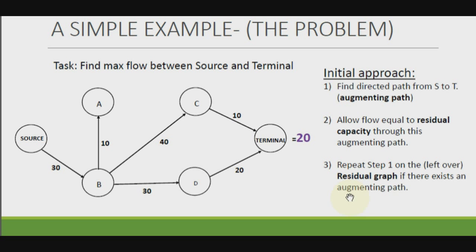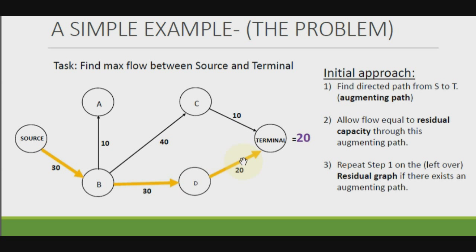This is our residual graph with the remaining capacities. We repeat step 1 and find a new path from source to terminal. We work out the residual capacities for this new path — in this case it's 20, because that is the maximum amount of flow we can push through. We then work out the residual graph again.